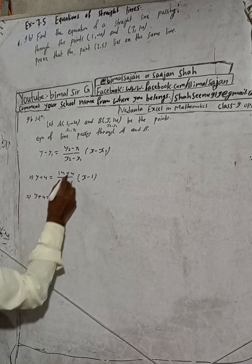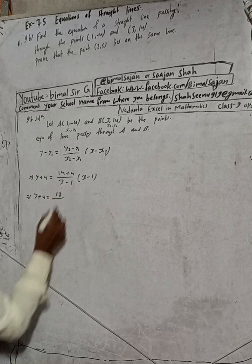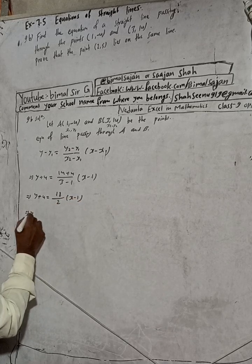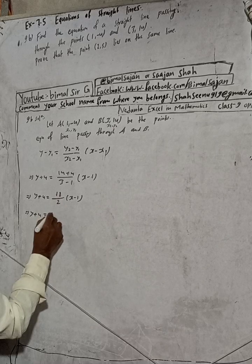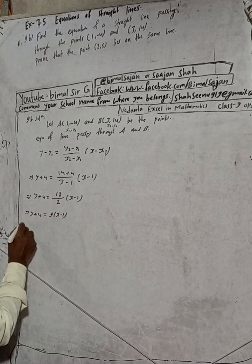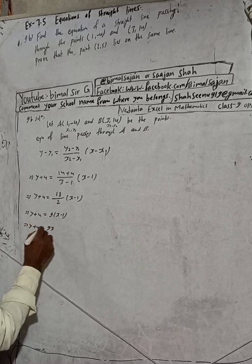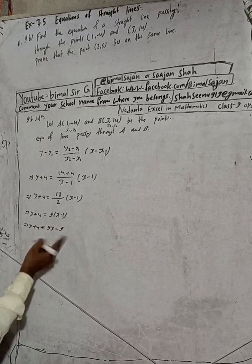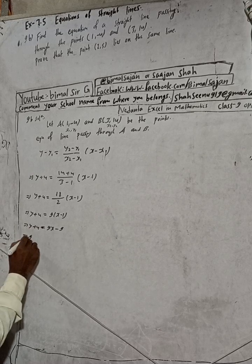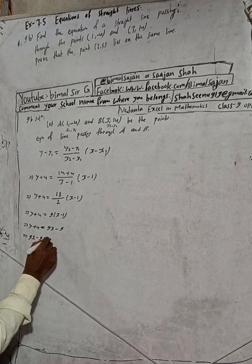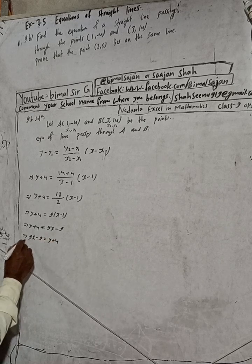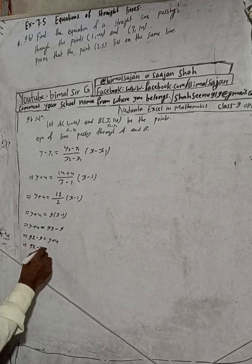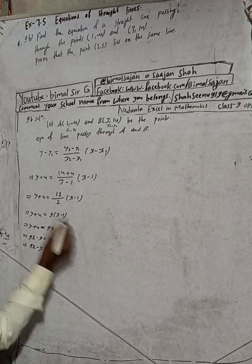So y plus 4 equals 14 plus 4, which is 18, divided by 3 minus 1, which is 2 — giving us 9. So y plus 4 equals 9 times (x minus 1), which expands to 9x minus 9. Rearranging: 9x minus y minus 9.